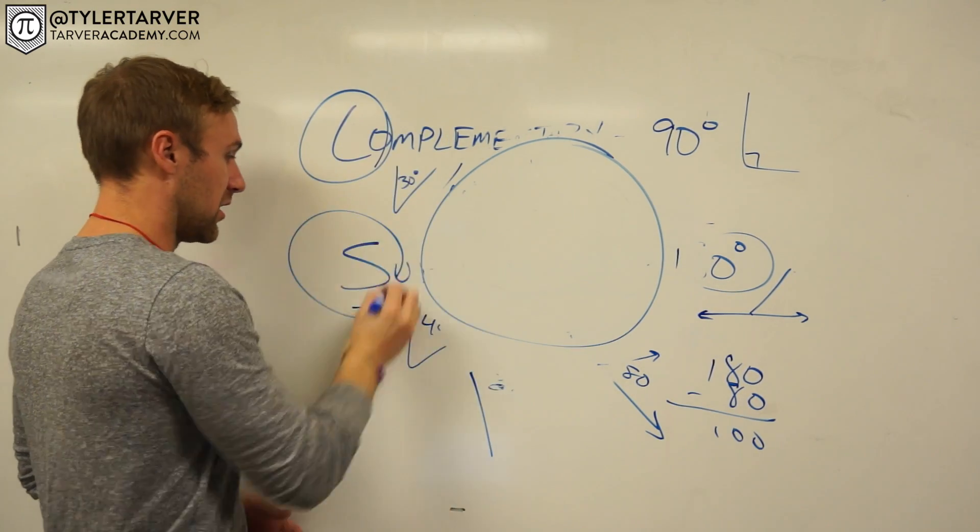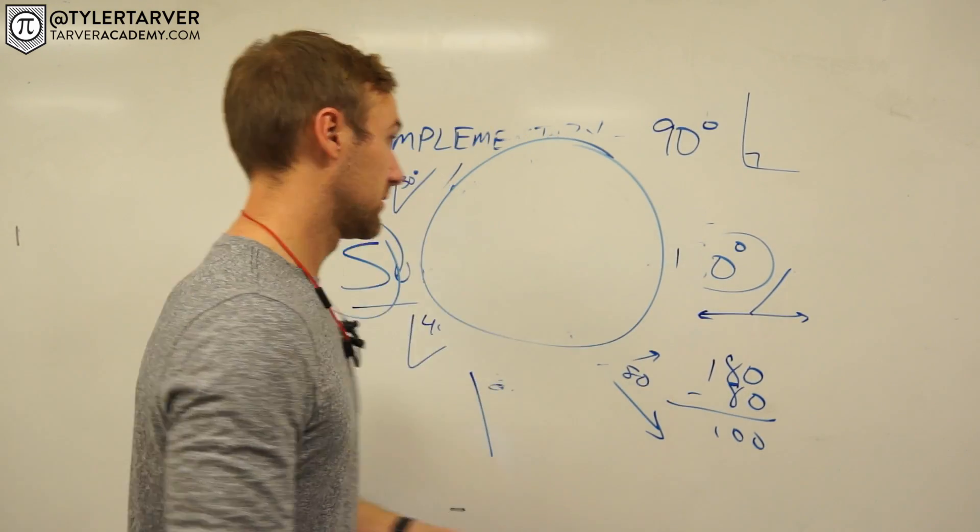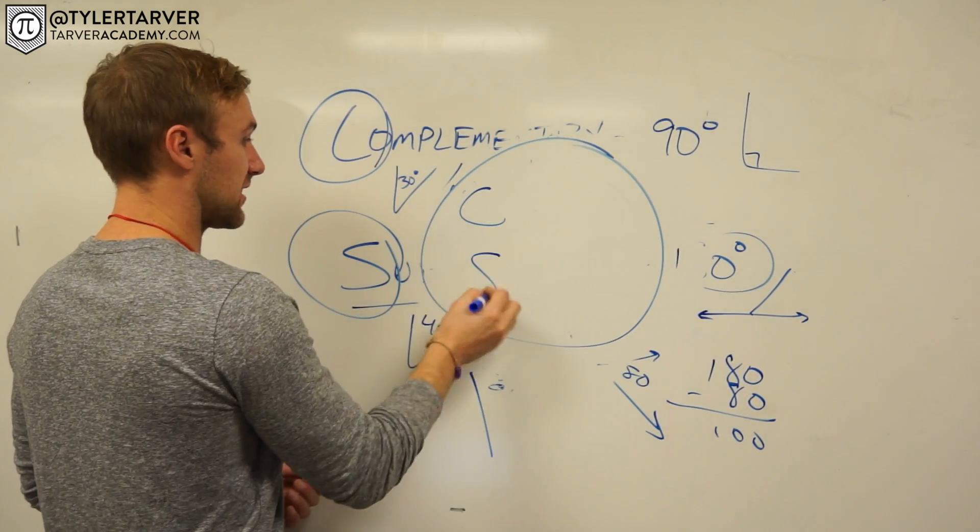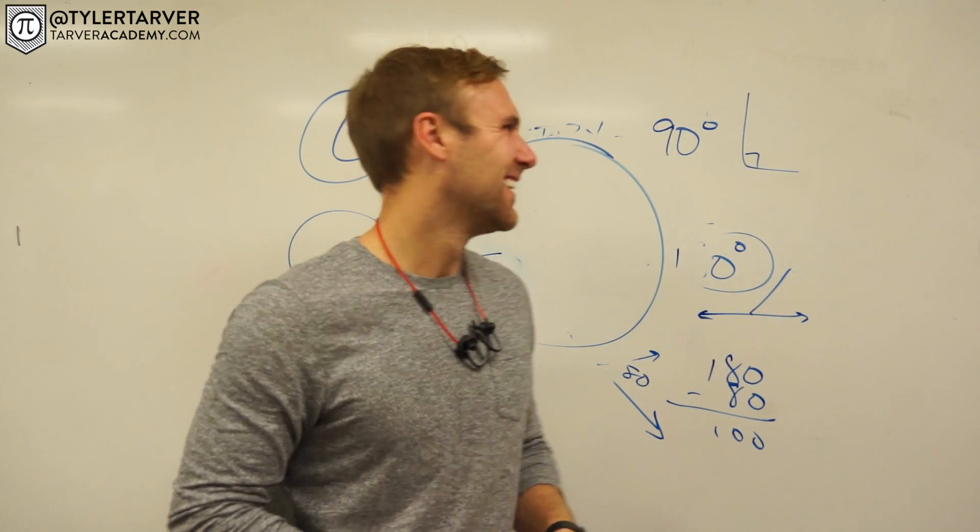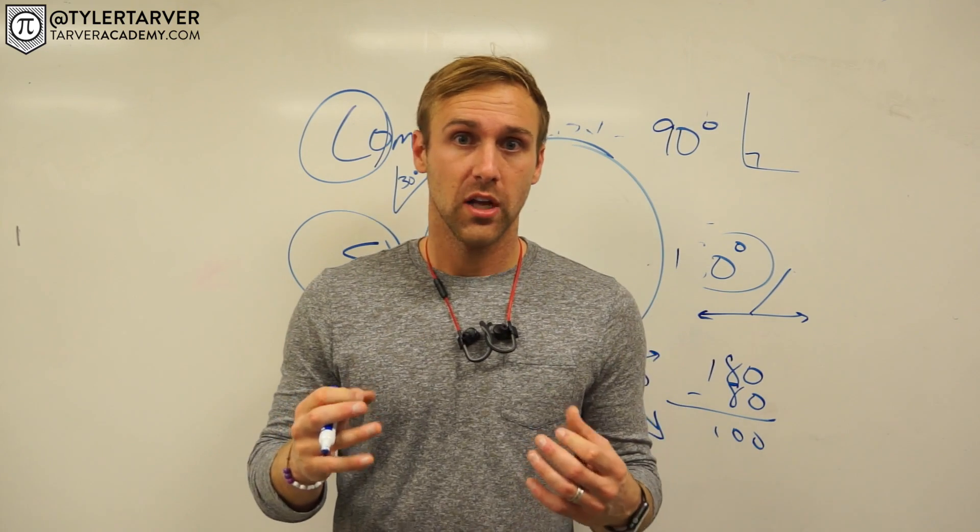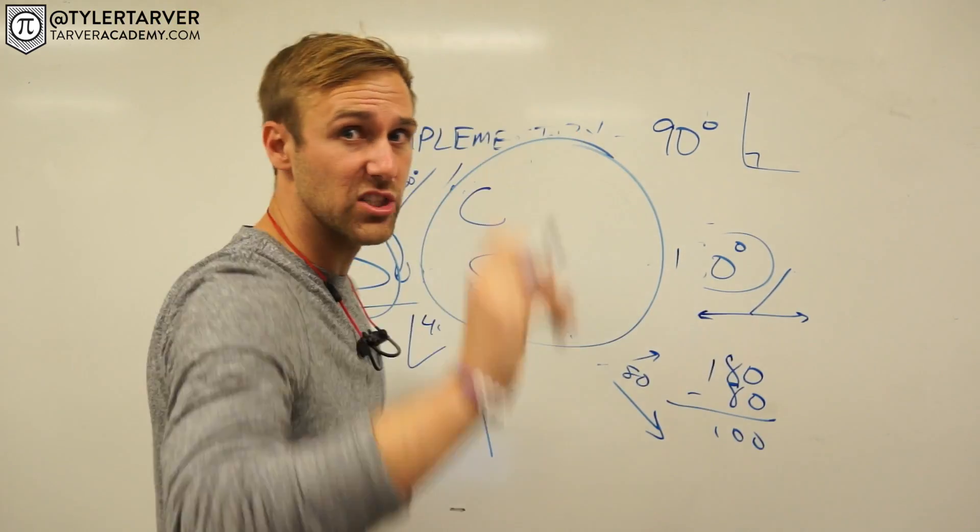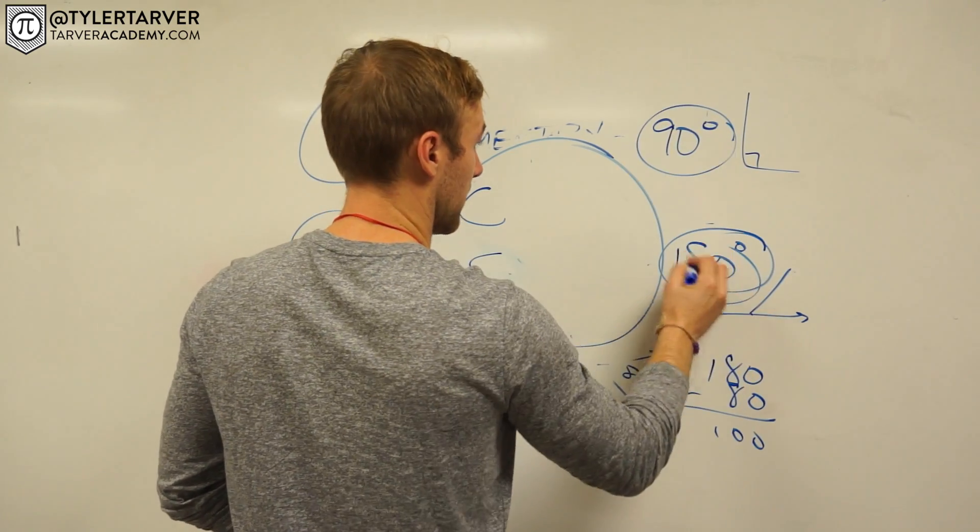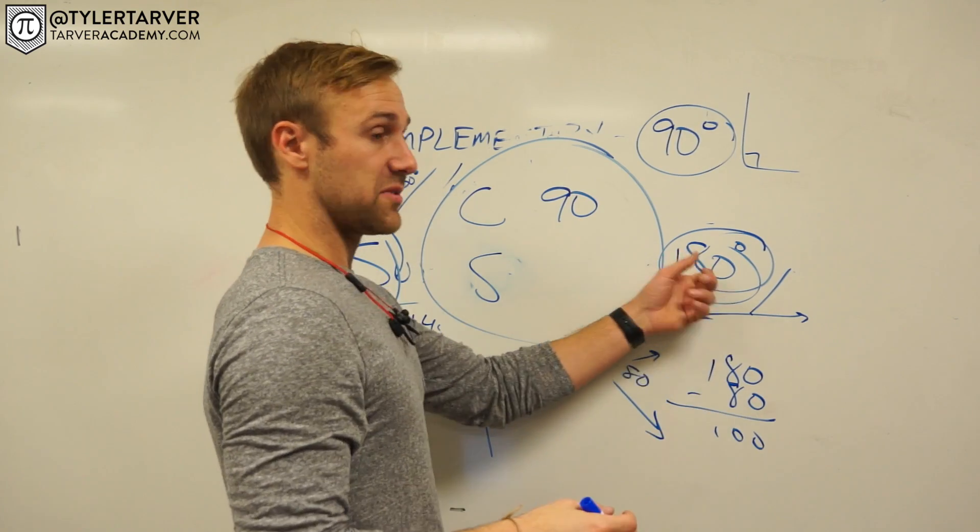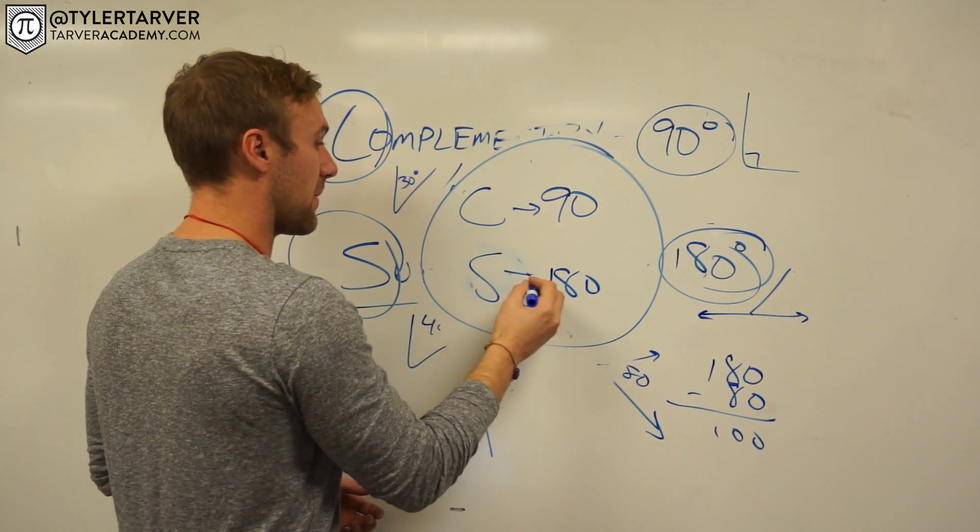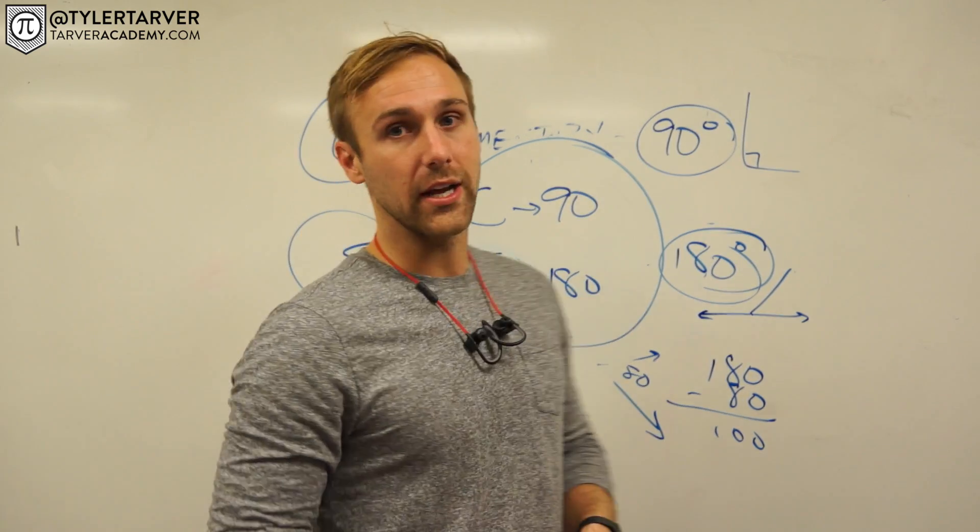Alphabetically, you've got complementary, you've got supplementary. Alphabetically, which one comes first? C or S? C. And then S comes second. Now, as far as numbers go, just like if you were counting from one and you could just count up into the world, which number comes first? 90 or 180? 90. Which one comes second? 180. And that's also the way they match up. Complementary means they add up to 90. Supplementary means they add up to 180.